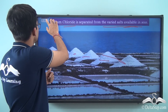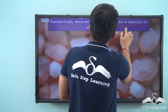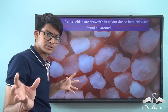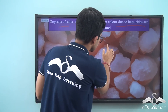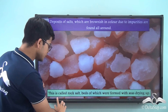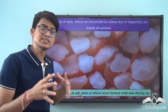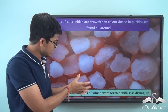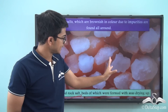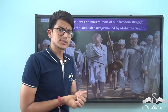Deposits of salts which are brownish in color due to impurities are found all around. You can see this is not like the normal white salt we use - they are a little brownish. These are called rock salt, because beds of them were formed when seas dried up, which is why they are brownish in color.